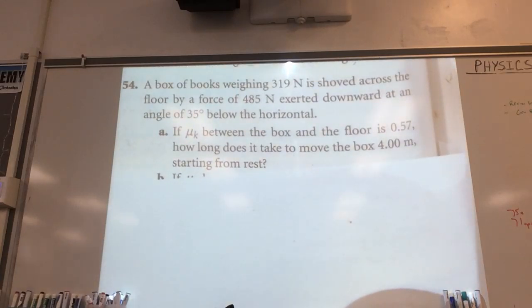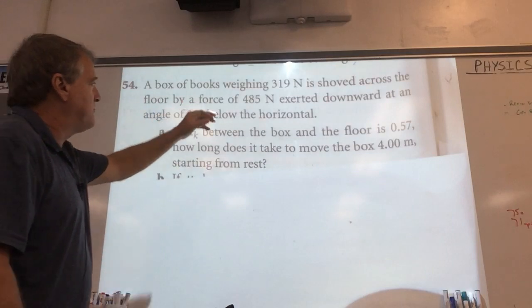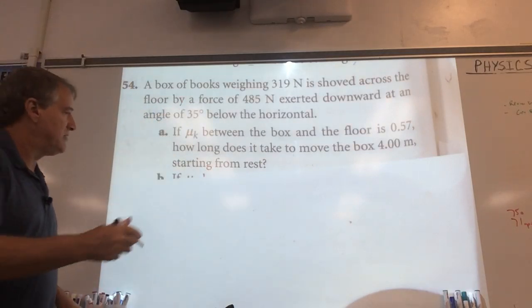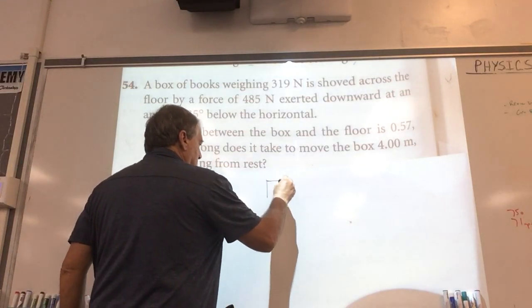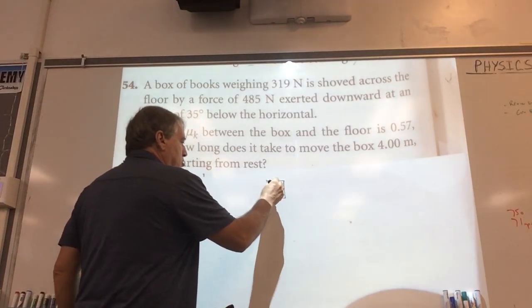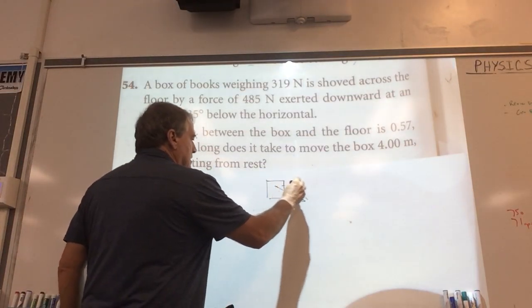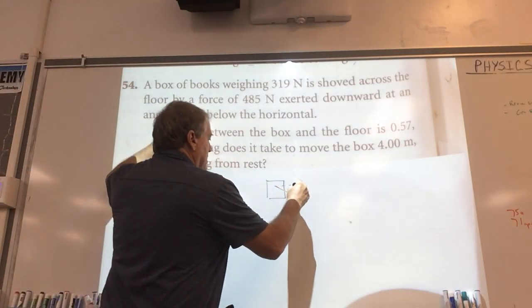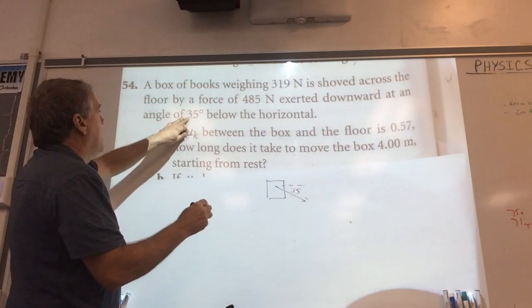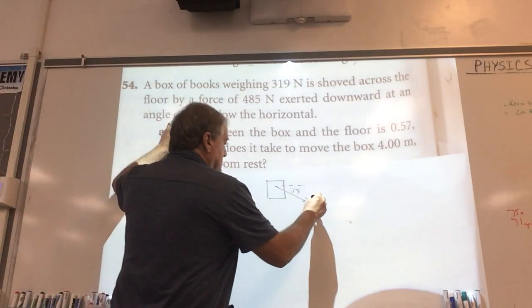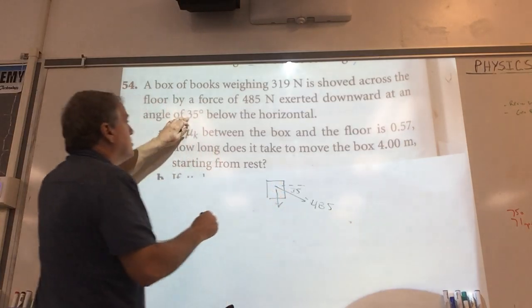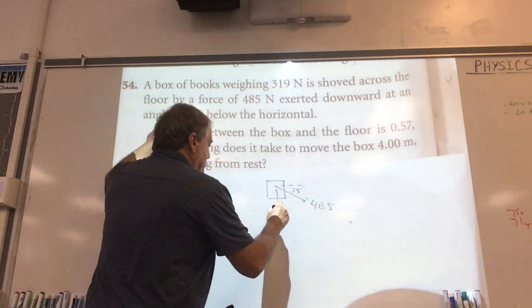A box of books weighing 319 Newtons is shoved across the floor by a force of 485 exerted downward at an angle of 35 degrees. So we'll just draw the box here. We're pushing it downwards at 35 degrees and with a force of 485 Newtons. So there's your 485.